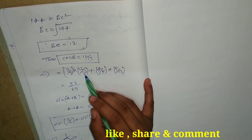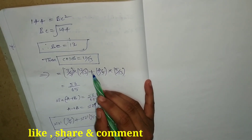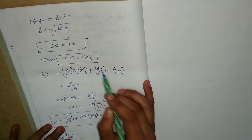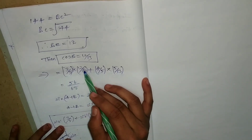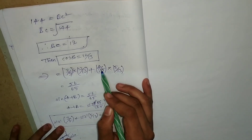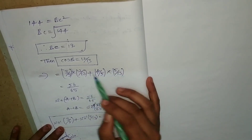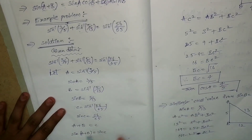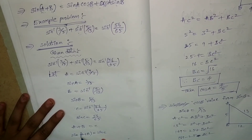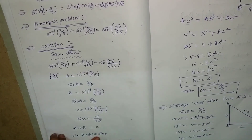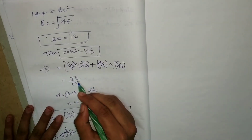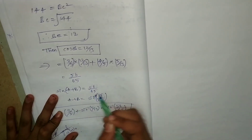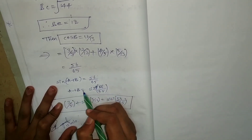Now substituting sin a, sin b, cos a, and cos b values into the sin a plus b formula: sin a cos b plus cos a sin b equals 3 by 5 into 12 by 13, plus 4 by 5 into 5 by 13. Simplifying, the final result is 56 by 65. So sin a plus b equals 56 by 65, which equals sin c.